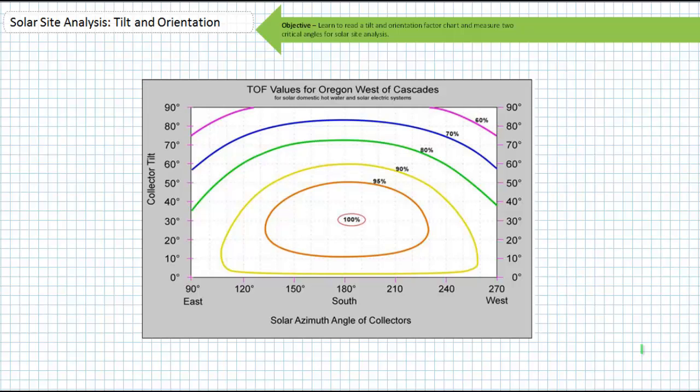Anyways, the TOF chart for your location should kind of look like a bullseye. Just like competitive archery, you get more points the closer you are to the center of the bullseye. The bullseye might be offset or kind of oval shape for reasons I'll get into later.